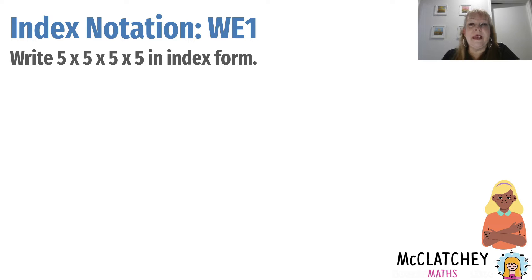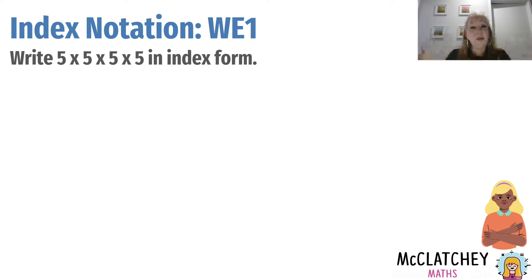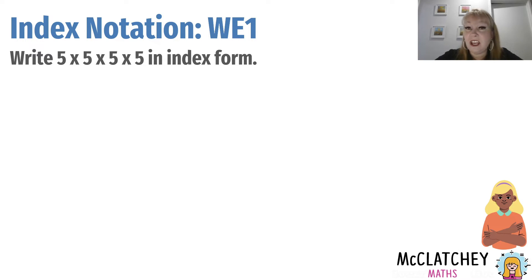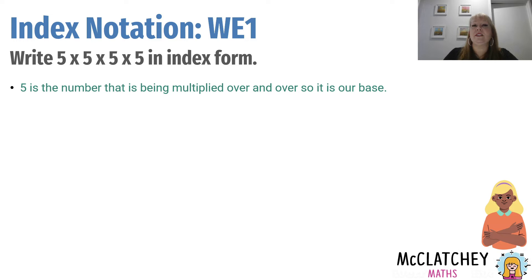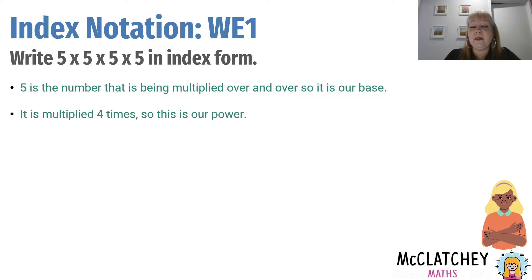Let's do a couple of worked examples looking at how to write index notation. The question asks us to write five times five times five times five in index form. Students sometimes get a little bit freaked out, but notice the question is not asking you to actually calculate that — it's just asking you to write it in index form, which means you're going to have a base and a power. The number being multiplied over and over is five, so five is our base. It gets repeated four times, so that's our power. The answer is five to the power of four.